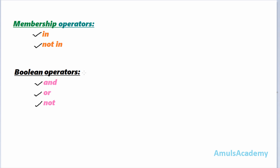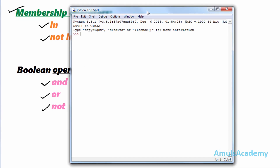Hello guys and welcome to Python programming tutorials by Amuls Academy. Today we are discussing membership operators and boolean operators in Python. First we will discuss membership operators. There are two membership operators: 'in' and 'not in'. These membership operators are used to check whether a given element is a member of a group of elements or not.